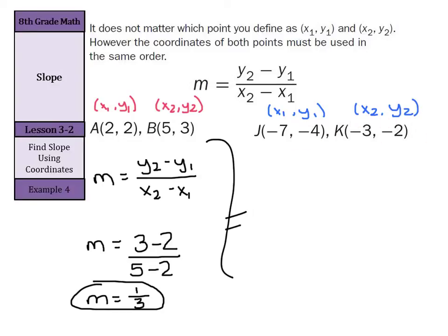And again, you could call this one x2, y2, and this one x1, y1. It doesn't matter as long as you're consistent with that being the first, that being the second, or the other way around. We can set up our formula here. m equals y2 minus y1 divided by x2 minus x1.